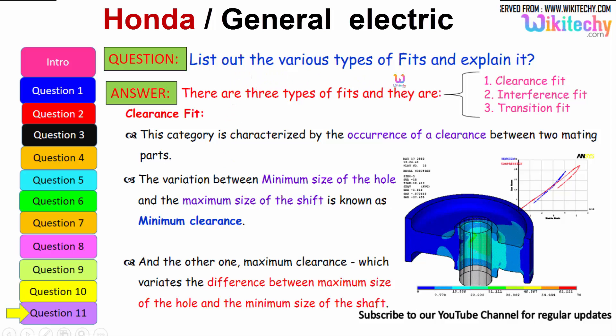Let us see the final question: list out the various types of fits and explain it. There are three types of fits available - clearance fit, interference fit, and transition fit. This category is characterized by the occurrence of clearance between the two mating parts. The variation between the minimum size of the hole and the maximum size of the shaft is known as minimum clearance, whereas maximum clearance will have the difference between maximum size of the hole and minimum size of the shaft. That is your clearance fit.